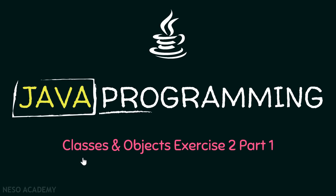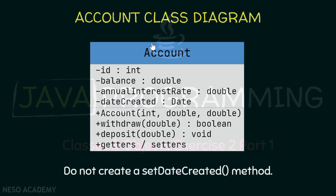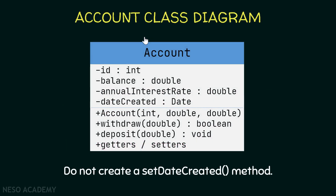Hello friends and welcome back. In this lecture we will create an Account class in Java. This is the Account class diagram - the class is called Account and we have a private attribute called id.